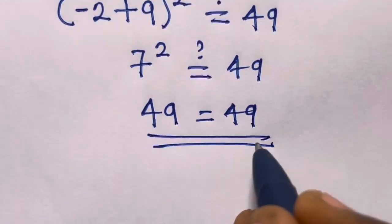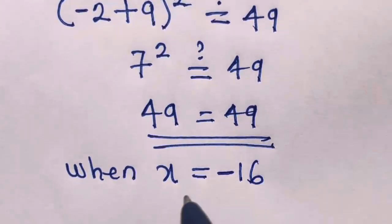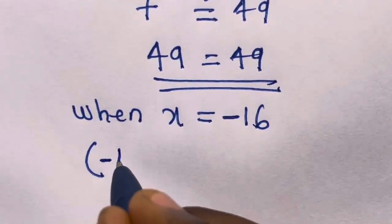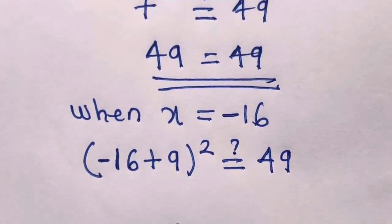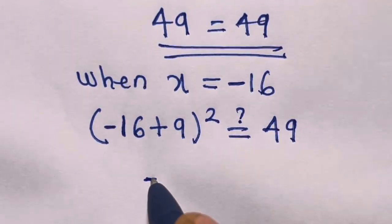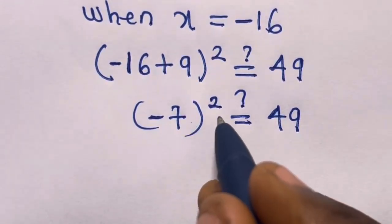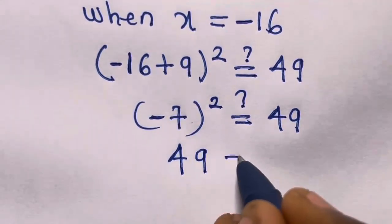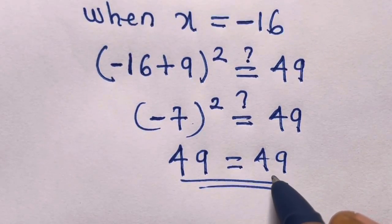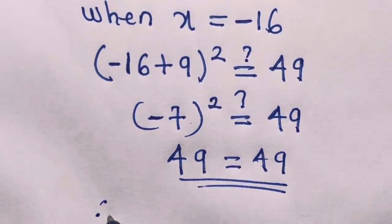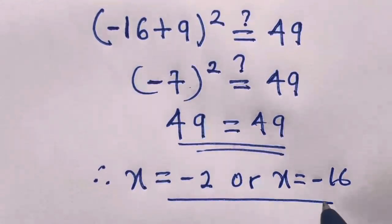Also, let's check the second value, x equals minus 16. We have minus 16 plus 9 squared. Minus 16 plus 9 gives us minus 7, and minus 7 squared gives us 49, which equals 49. So x equals minus 16 also satisfies the equation. Therefore, x equals minus 2 or x equals minus 16 is our answer.